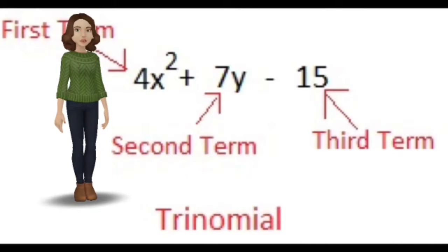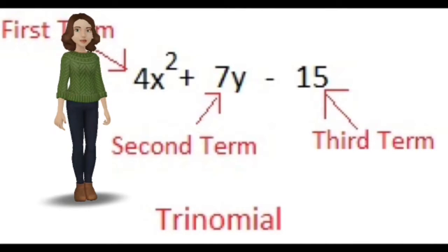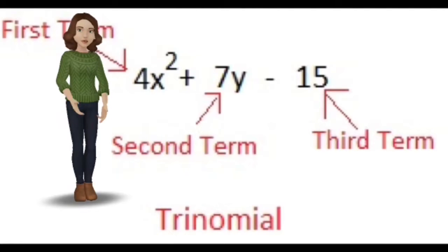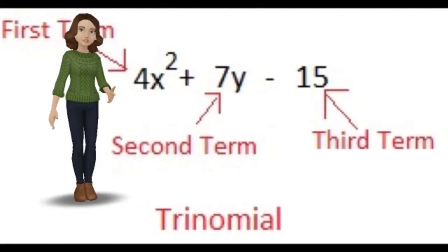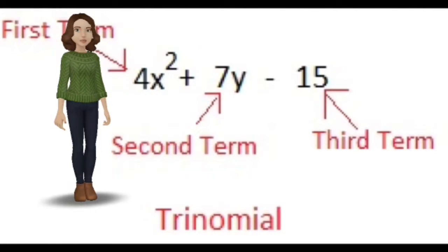A trinomial is the sum of three monomials. In a trinomial there are three terms. The first term is the monomial, the second term is the binomial, and the third term is the trinomial.